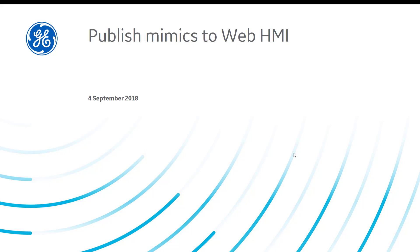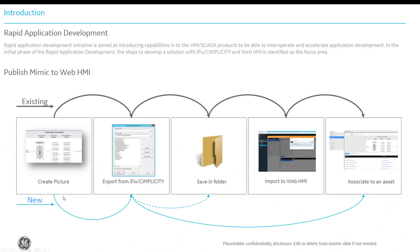Hello everyone. In this video we are going to see how pictures converted as Mimics could be published directly from iFix to WebHMI. In the previous process we had to export Mimics to a folder into an archive format and then import them into WebHMI. But with this new feature you could directly publish them into WebHMI.